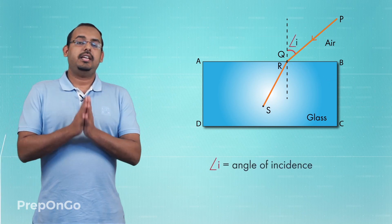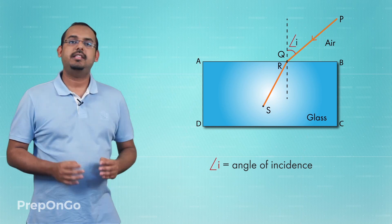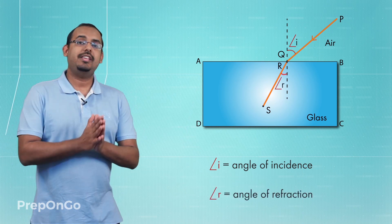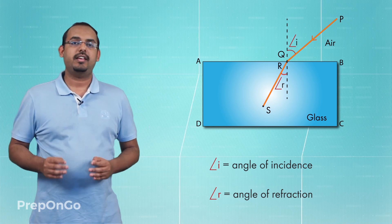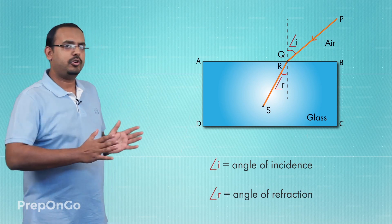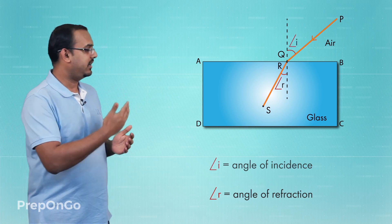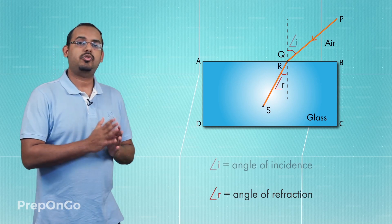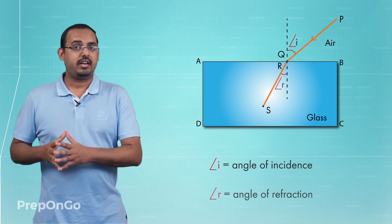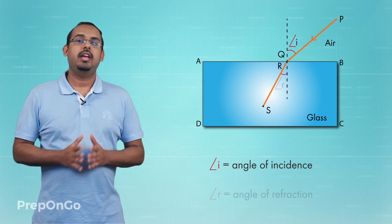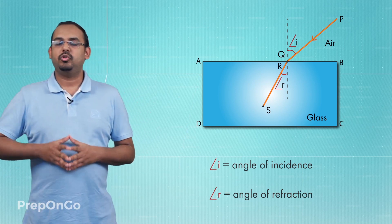The angle that the incident ray makes with the normal to the surface at the point of incidence is called the angle of incidence. Similarly, the angle which the refracted ray makes with the normal to the surface at the point of incidence is called the angle of refraction. The angle of incidence is represented by angle i, and the angle of refraction is represented by angle r.